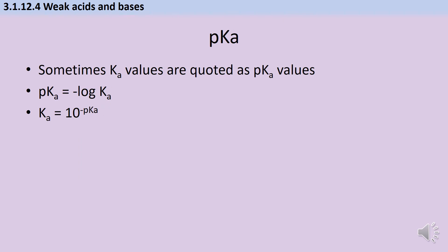There's one final concept to cover: pKa. Sometimes a question gives pKa instead of Ka. The relationship between Ka and pKa is exactly the same as between [H⁺] and pH. To find pKa, take the negative log of Ka. To find Ka — which you're more likely to need — calculate 10 to the power of the negative pKa value.